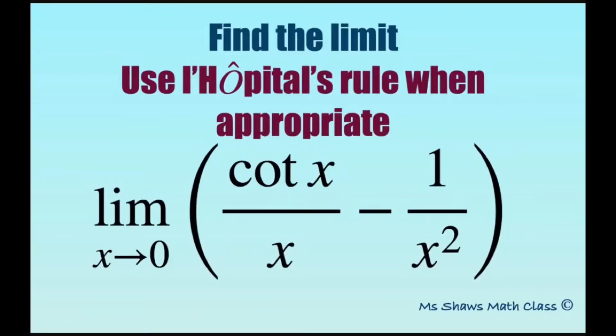Hi everyone, we're going to find the limit as x approaches zero of cotangent of x divided by x, minus 1 divided by x squared. Before we start, I'm going to rewrite this cotangent of x as 1 divided by tangent of x.